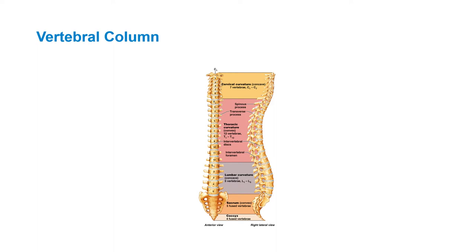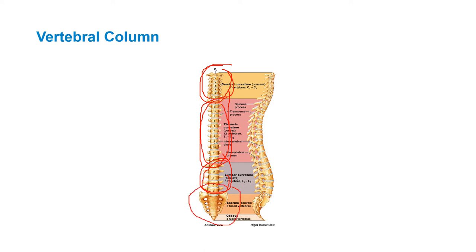Here's the cervical spine, the thoracic spine — with ribs articulating with every thoracic vertebra — and then five lumbar. Seven cervical, 12 thoracic, five lumbar, and then the sacrum. Notice these holes — these are foramen. You have a foramen for a nerve that goes anteriorly and posteriorly; we'll talk about that later.